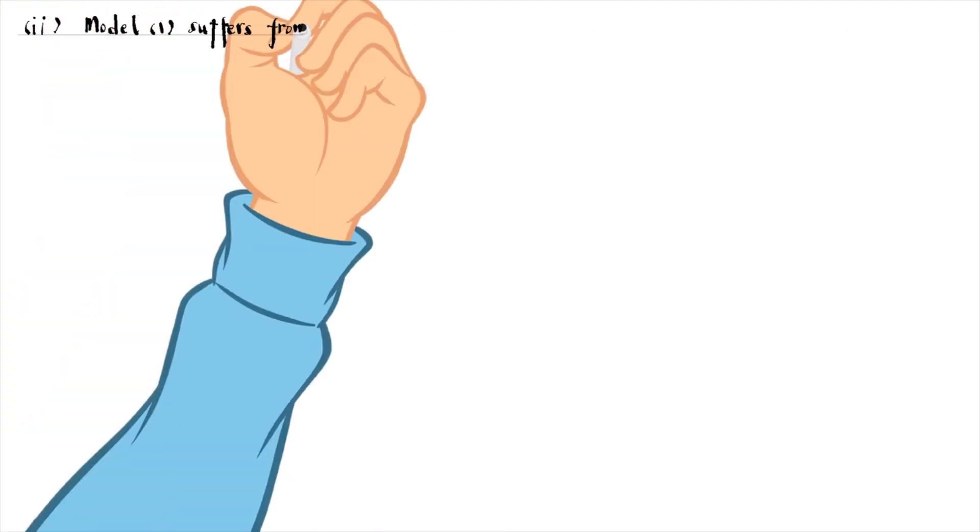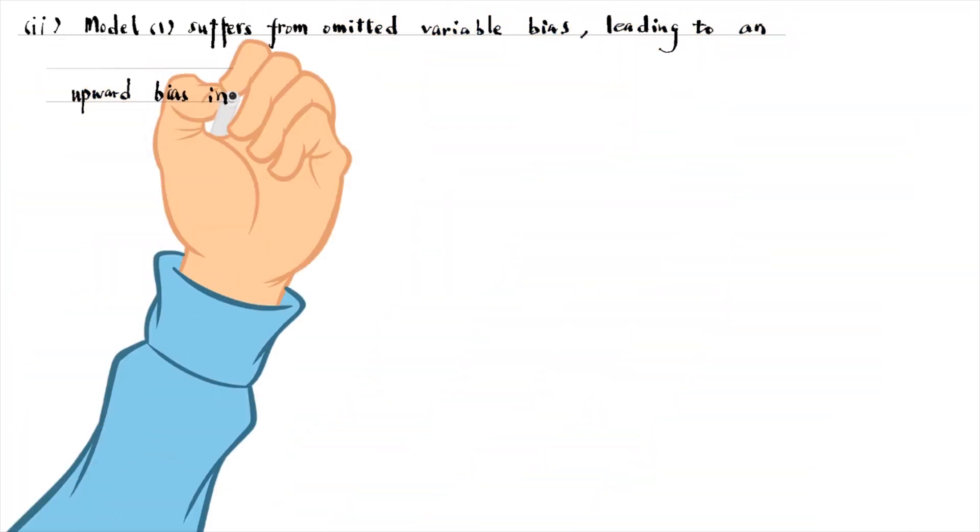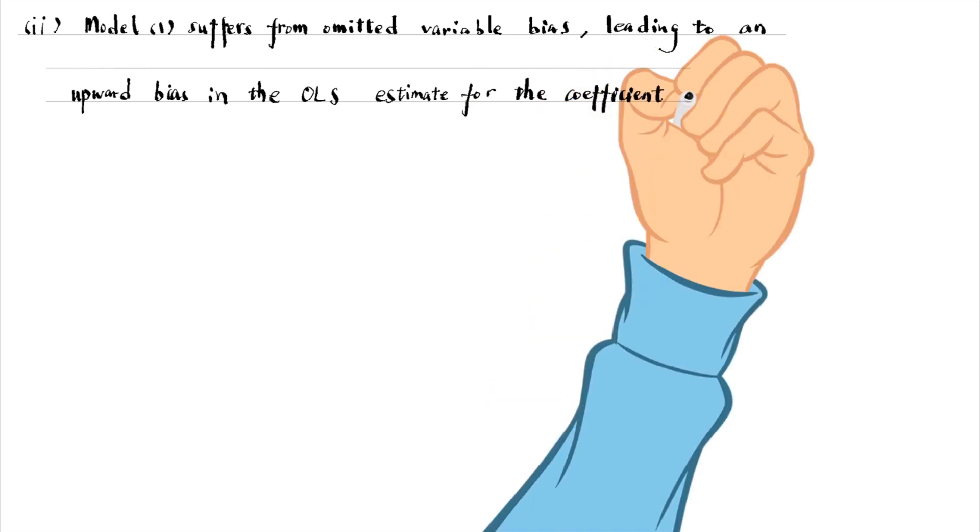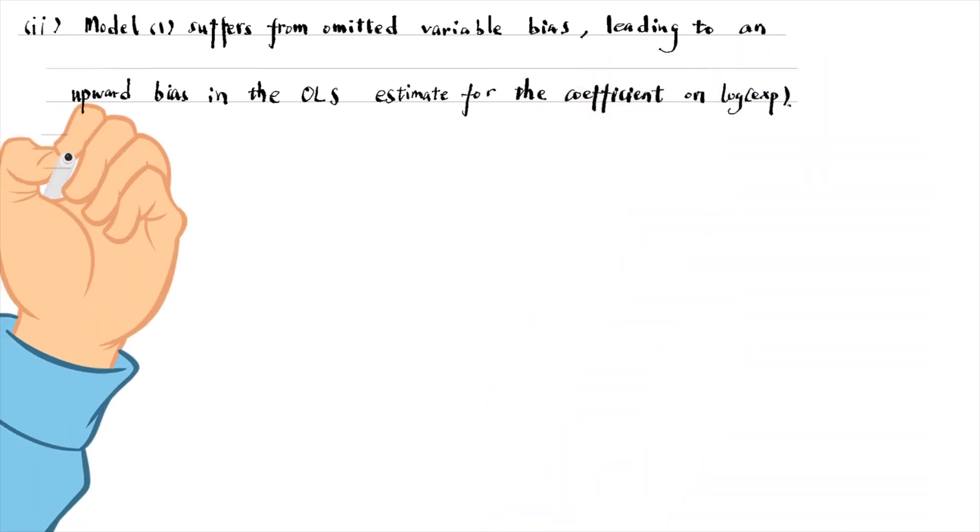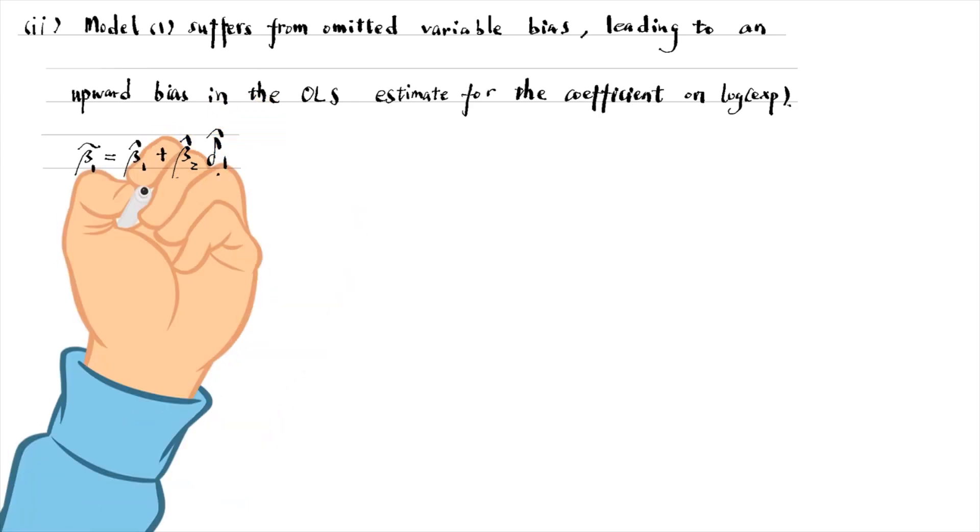For part 2, model 1 suffers from omitted variable bias, leading to an upward bias in the OLS estimate for the coefficient on log expenditure. To see that, we can write down the omitted variable bias formula.